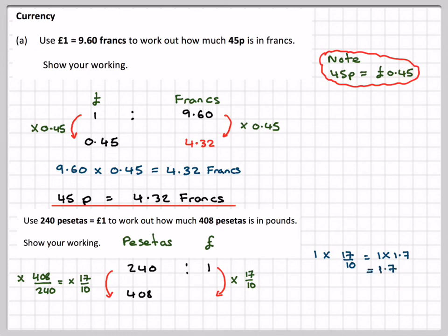But we can't have 1.7 pounds, so we have to write it as 1.70. This zero is very, very important. So therefore, 408 pesetas is equal to 1.70.